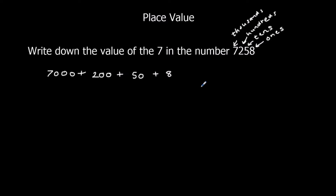So we've got 7000, 200s, 5 tens and 8 ones. The question said write down the value of the 7, and that's 7000. We could write it as a number: 7000.